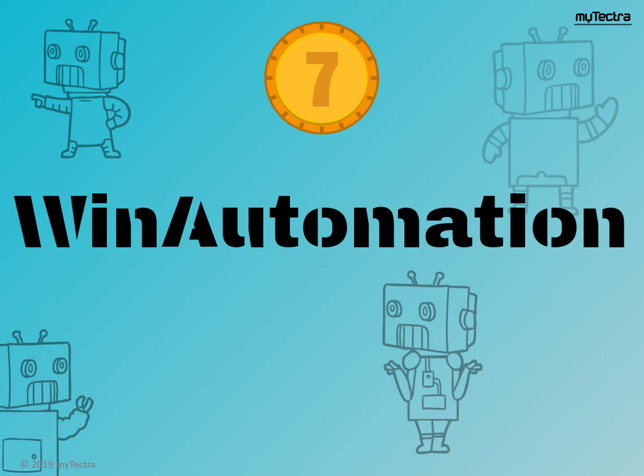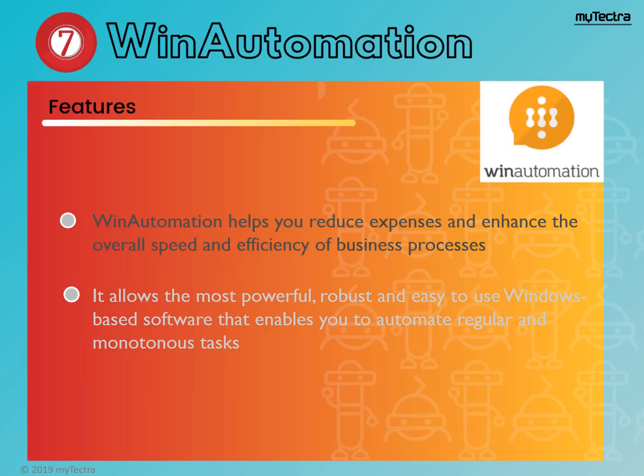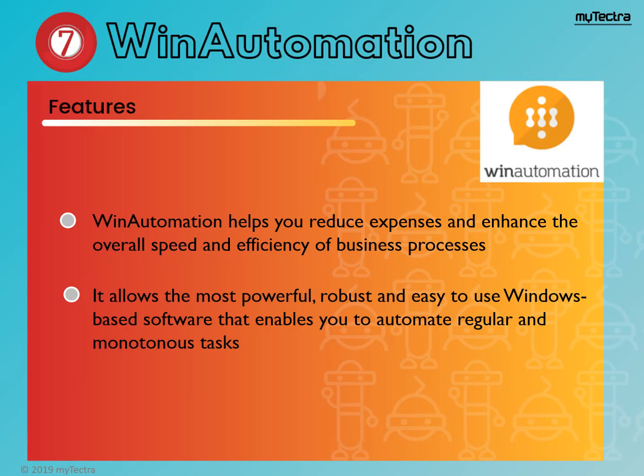Number 7 is Win Automation. Win Automation is a very genuine desktop automation tool and gives a powerful, robust, and easy-to-use Windows-based platform for developing software robots. Win Automation delivers the benefits of robotic process automation to your desktop. Win Automation helps you reduce expenses and enhance the overall speed and efficiency of business processes. It allows the most powerful, robust, and easy-to-use Windows-based software that enables you to automate regular and monotonous tasks.